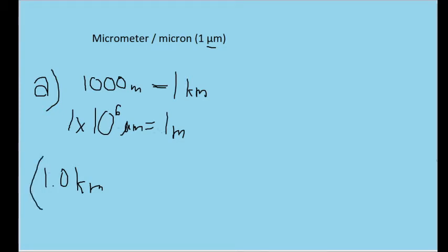I'll set up a basic chain link conversion where I have 1,000 meters and one kilometer. I want to convert kilometers to meters. I can do that by putting one kilometer in the denominator, and I'm putting it in the denominator specifically so that once I make the conversion, we can see that the units will cancel out.